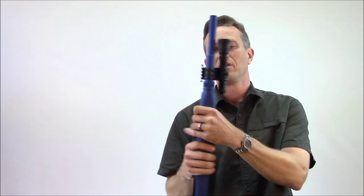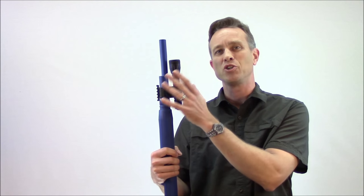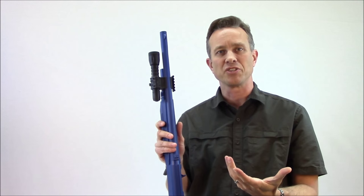Similarly, if you have a shotgun that doesn't have rails, the Elzetta ZSM flashlight mount attaches to the magazine tube and barrel, allows you to get that light on your gun without a rail system.